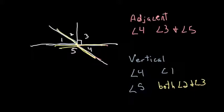So, remember vertical angles have to be across from each other and congruent. Adjacent has to share a side.